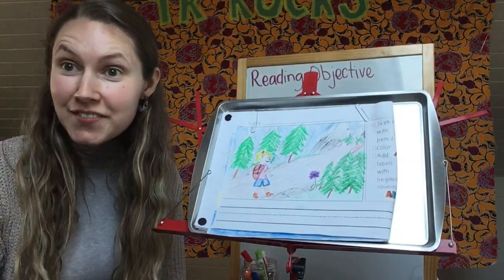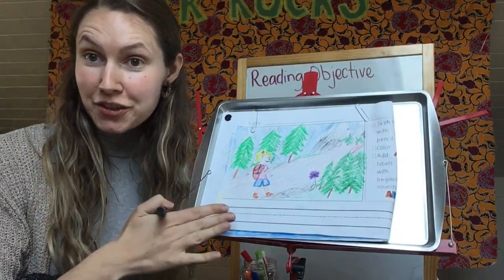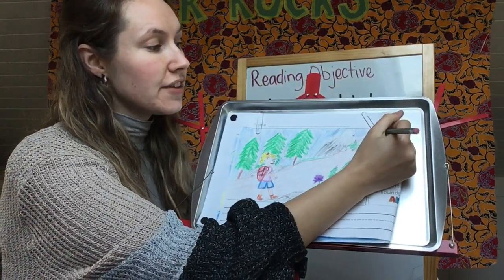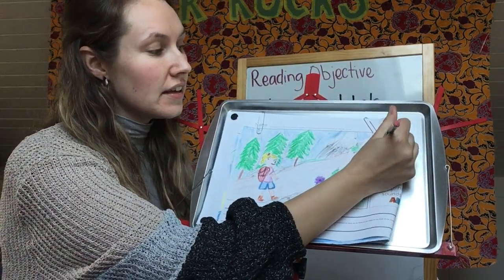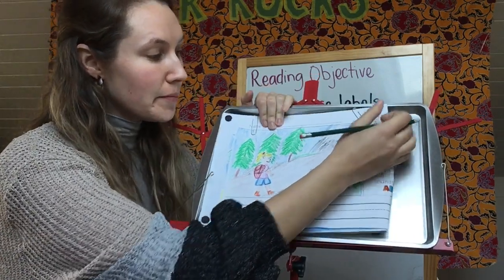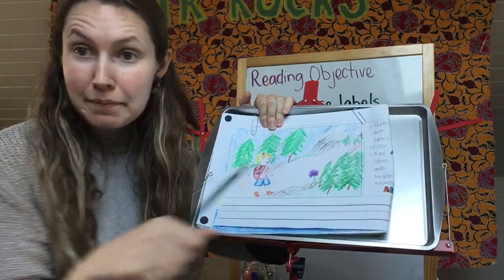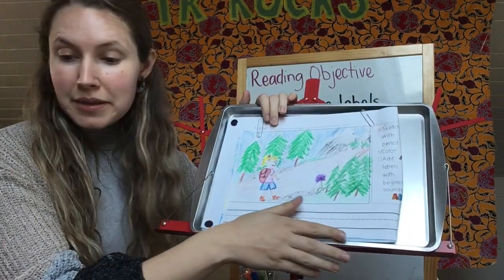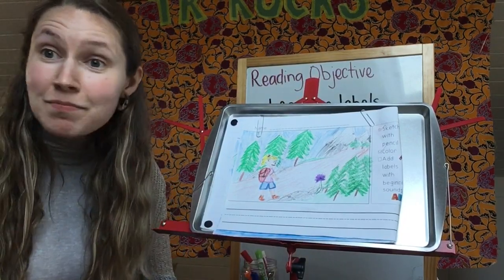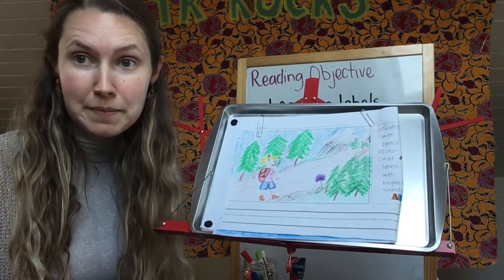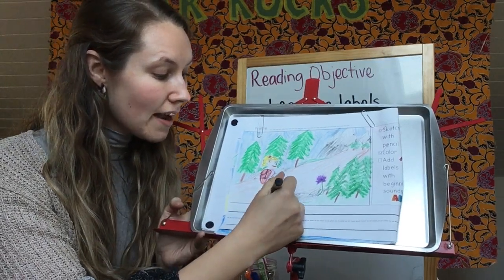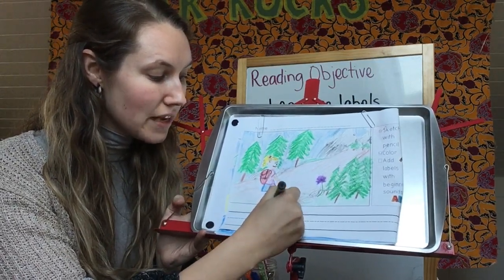I just finished coloring in my journal. So now I can check off sketch and check off color. Now it's time to add my labels. I'm going to take my black crayon again because that's easier to see, and I'm going to start going in and labeling my picture. Here I have me — I'm going to use my name to label myself.